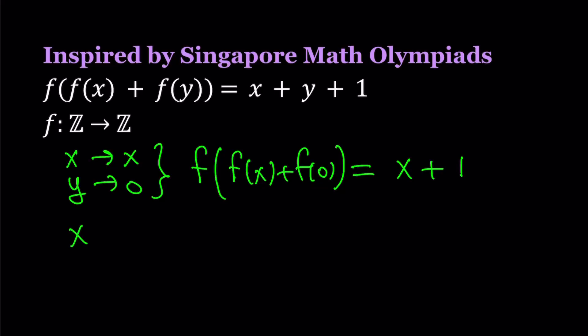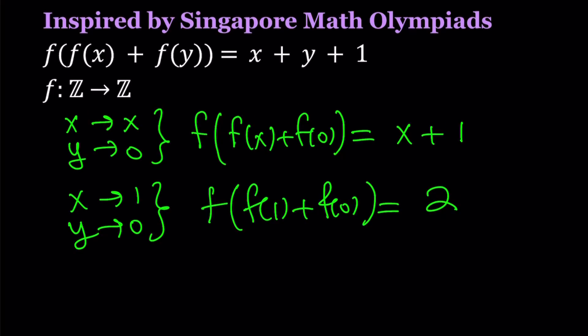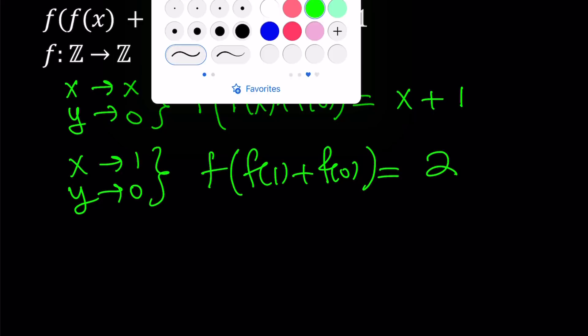And now, let's go ahead and replace x with 1 and y with 0, and that's going to give us f(f(1) + f(0)) = 2. Because you're replacing x with 1, we get a numerical value here. So we would like to take advantage of these two equations.